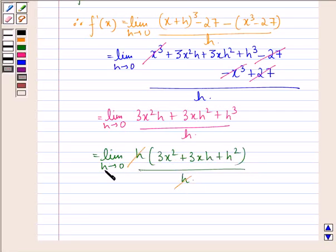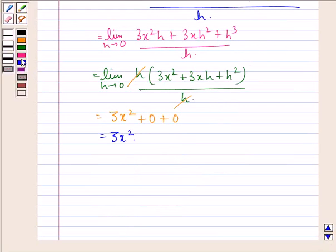Now we simply put h equal to 0 in this expression and we get 3x square plus 0 plus 0, and that is equal to 3x square. So our answer to this question is 3x square.